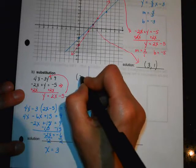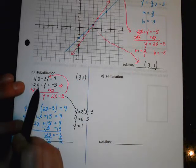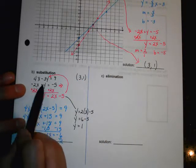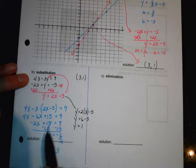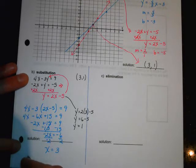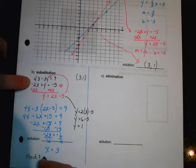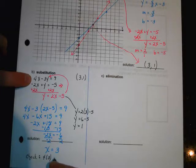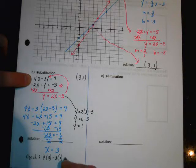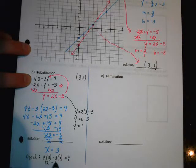We used this equation to solve. So we're going to use this equation to check it. So let's go ahead and just pop the check in there. Are you ready? So it's 4 times x, which is 3, minus 3 times y, which is 1. Does that equal 9? So does 12 minus 3 equal 9? Yep, it does. We rock. All right, so that's substitution.